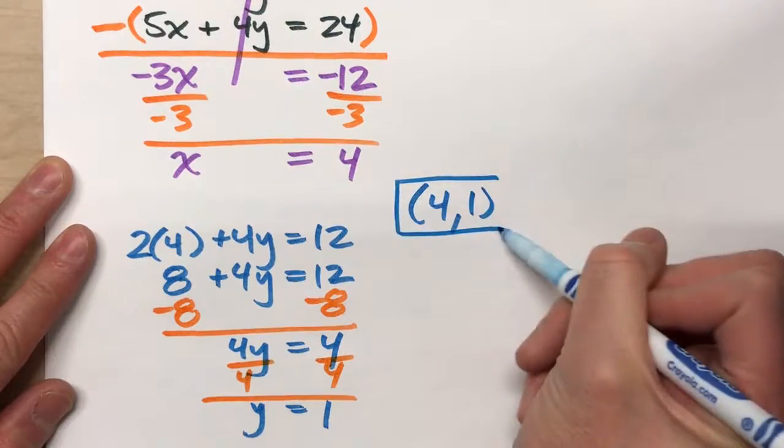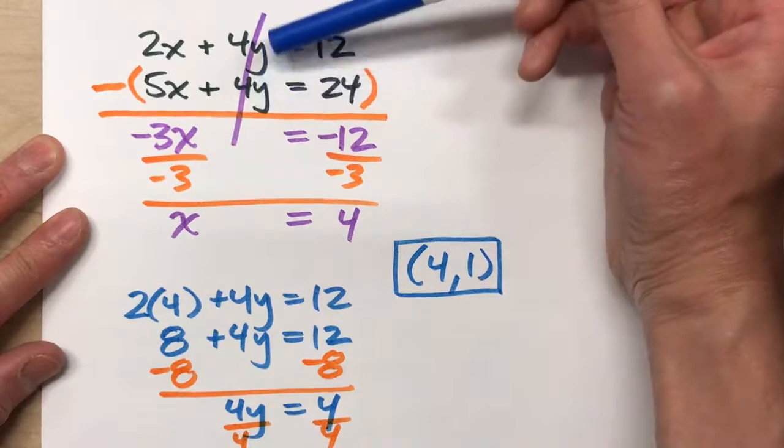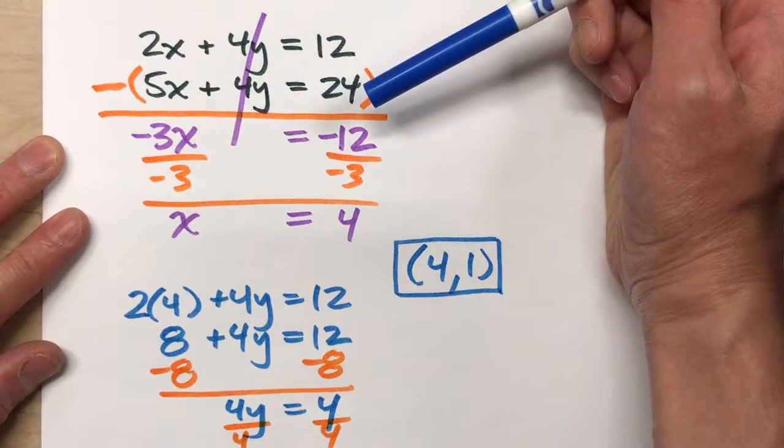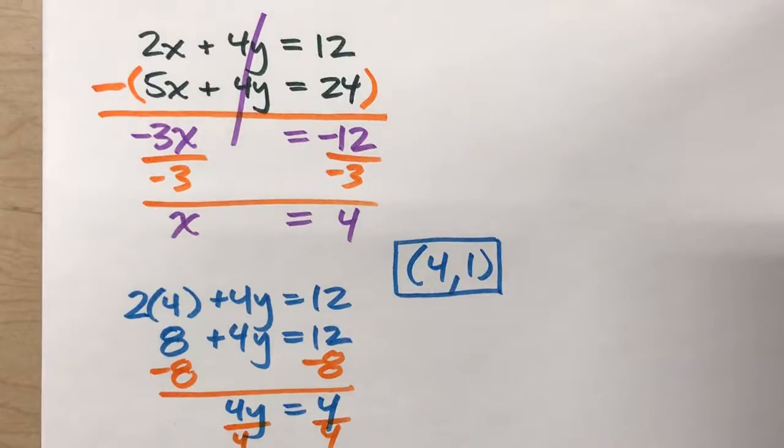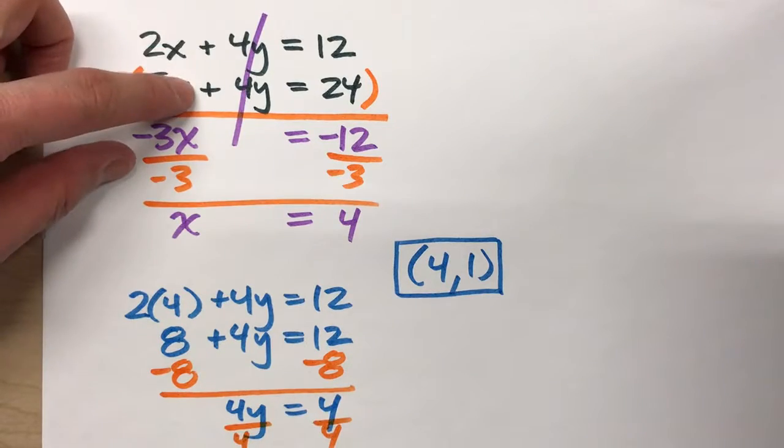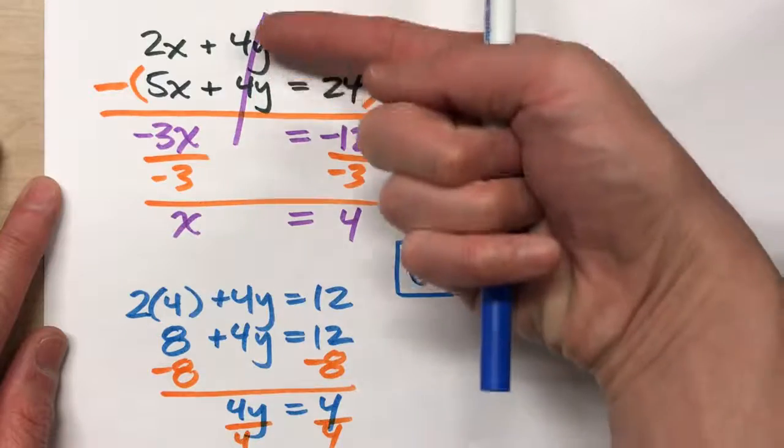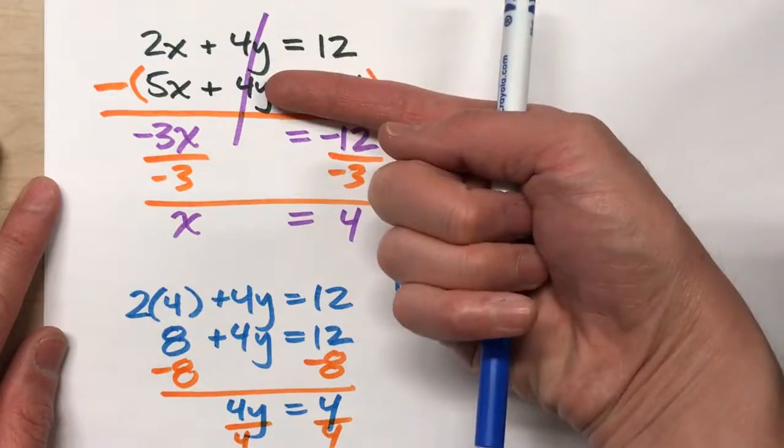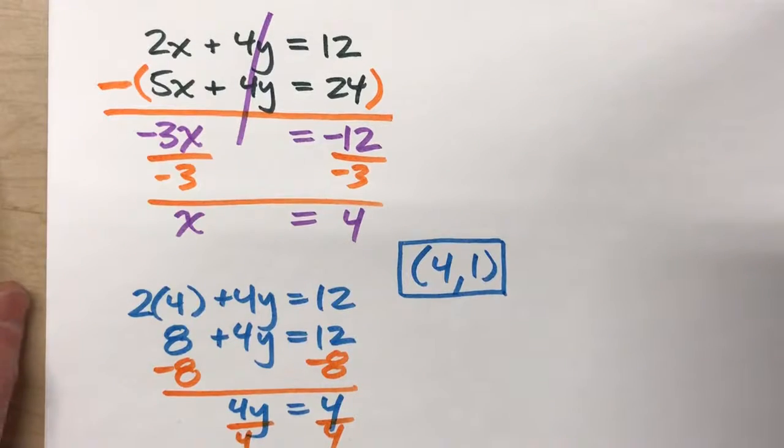And notice, the only reason why this method works is because we have the exact same amount of y's in both equations. And it would also work if we had the same number of x's in both equations. So yesterday's method of adding the equations worked when we had the same number of x's or y's when one was positive and one was negative. Today, when we have the same number of x's or y's and they're both the same sign, we can subtract them and use elimination that way.